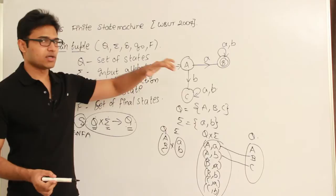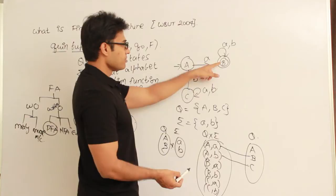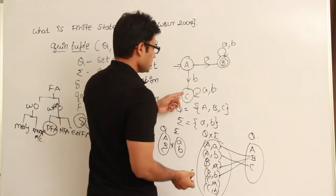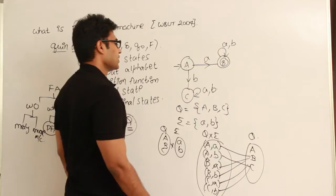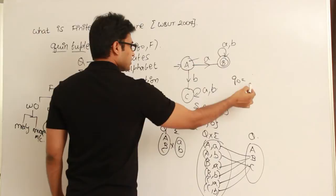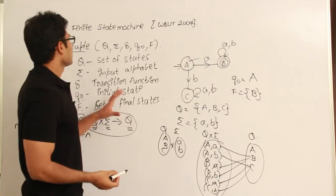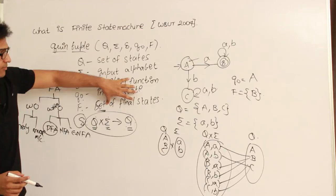A on b goes to c; B on small a and small b goes to b itself; C on small a and small b goes to c itself. The initial state Q-naught is a, and F is the set of final states — here there is only one final state, which is b. So just write about all five components, elaborate them, give this example, and explain.